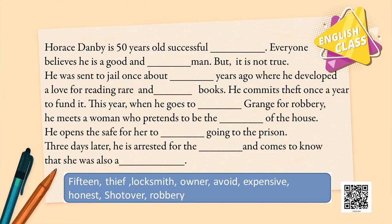Horace Danby is a 50-year-old successful locksmith. Everyone believes he is a good and respectable man, but it is not true. He was sent to jail once, about 15 years ago, where he developed a love for reading rare and expensive books. He commits thefts once a year to fund it — to get the money for the books.